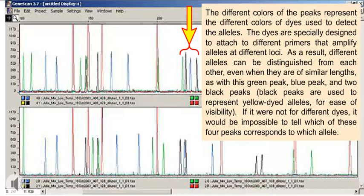Black peaks are used to represent yellow dyed alleles for ease of visibility. If it were not for different dyes, it would be impossible to tell which of these four peaks corresponds to which allele.